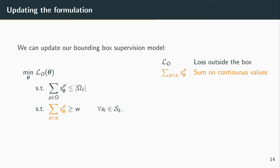And we replace the sum over the true label by the sum on the predicted probabilities. So we are forcing for each segment, we are forcing the sum of the probabilities to be greater or equal to W.